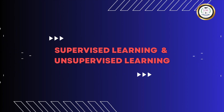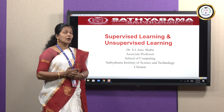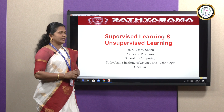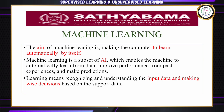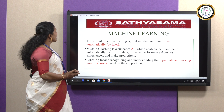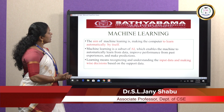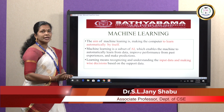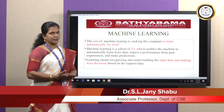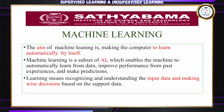Before we get into this topic, we need to understand what machine learning is. Machine learning is a subset of AI — artificial intelligence — which enables the machine to automatically learn from data, improve performance from past experience, and make predictions. The aim of machine learning is making the computer learn automatically by itself, to learn like a human.